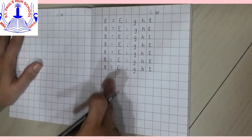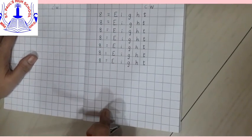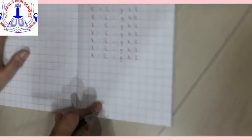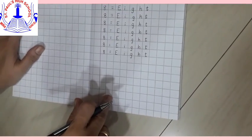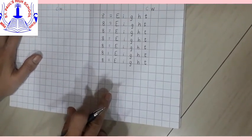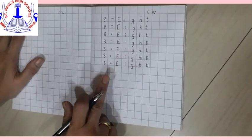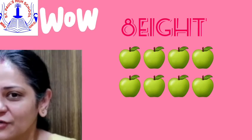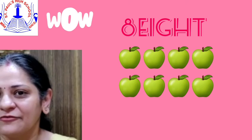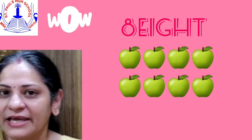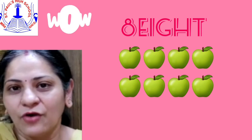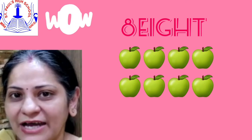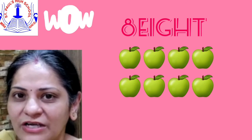So now children, the rest of the lines you are going to practice it at home. And what you have to do, you have to always say and write. So children, what we have learnt today? We have learnt number name 8. And what we have done? We have revised from number name 1 to 7.